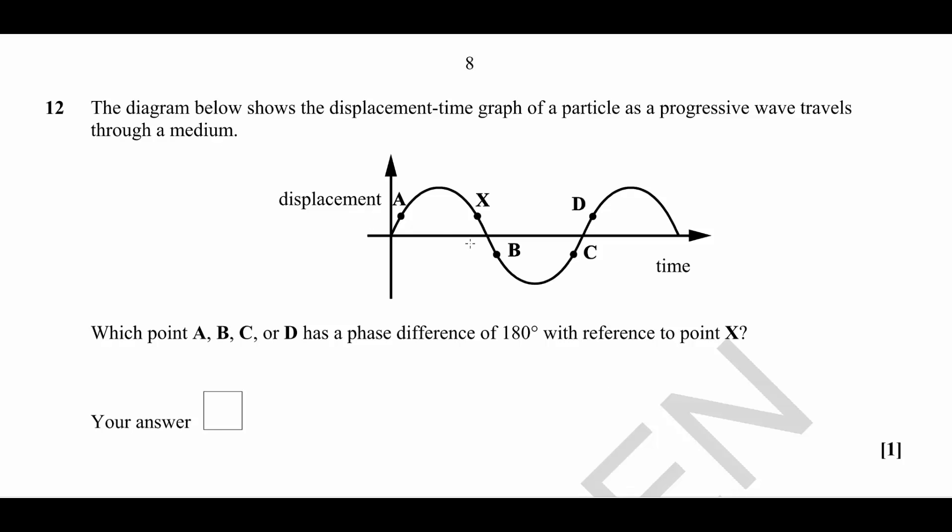Which of the points A, B, C or D has a phase difference of 180 degrees compared to point X?